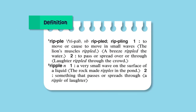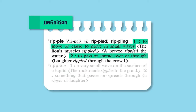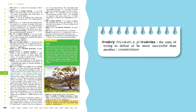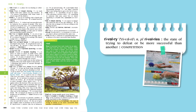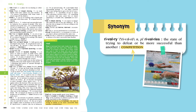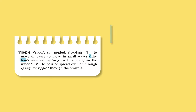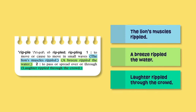Now let's look at the definition. It follows a bold colon and tells you what the word means. The verb ripple has two meanings. Down at the bottom of this page, the definition for the word rivalry is followed by the word competition in capital letters. The capital letters tell you that competition and rivalry are synonyms — the two words mean the same thing. Definitions are often followed by examples of the word in use, to help you understand the meanings and how they're used.